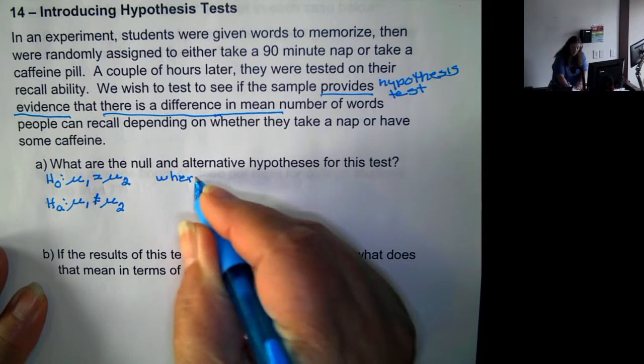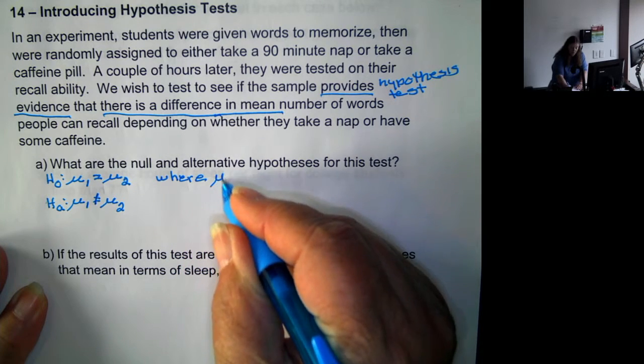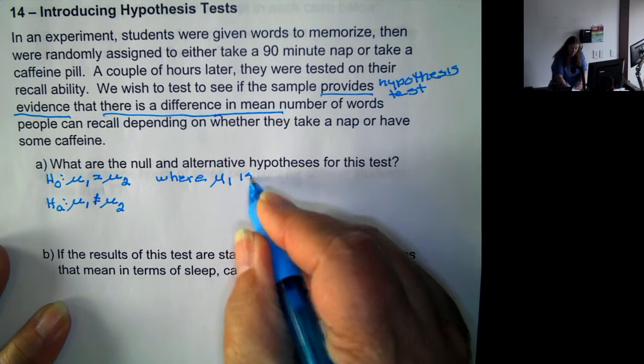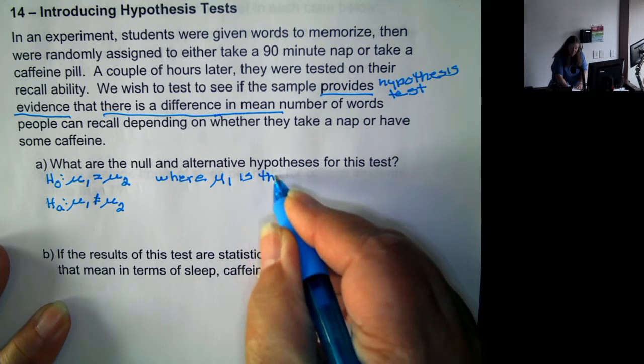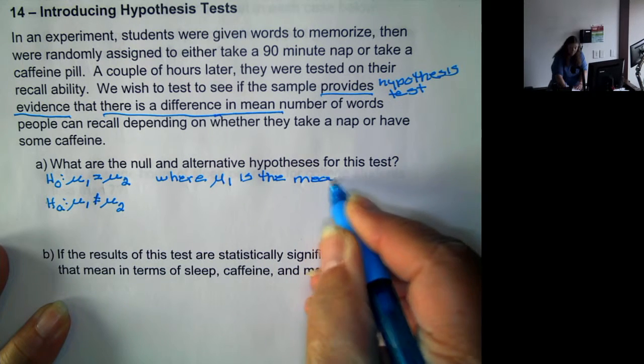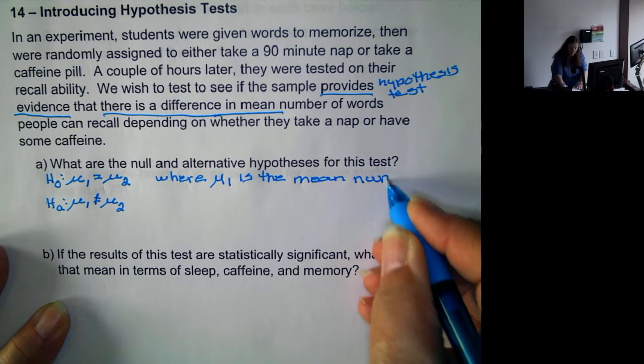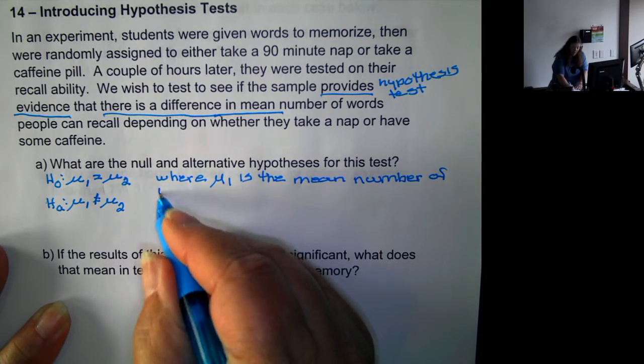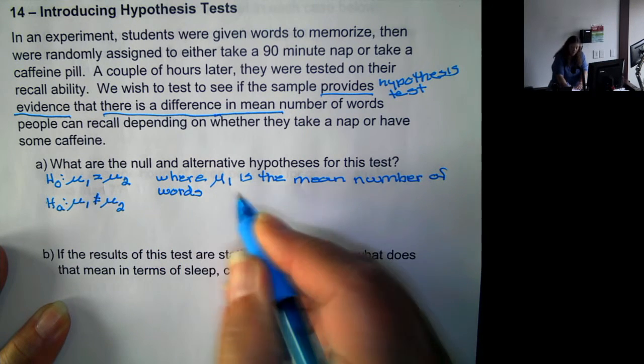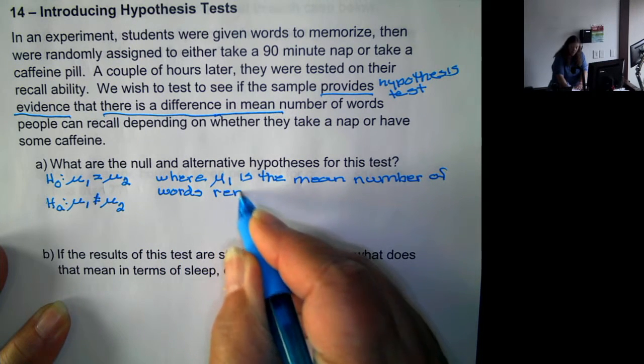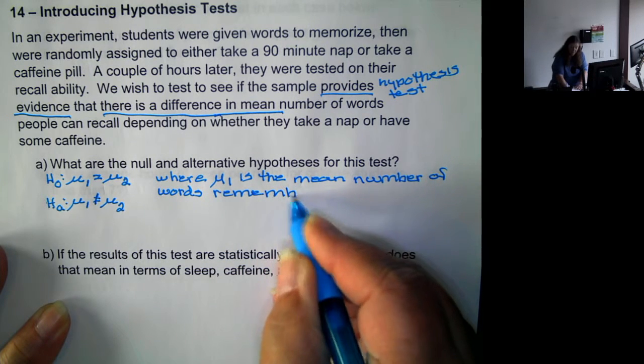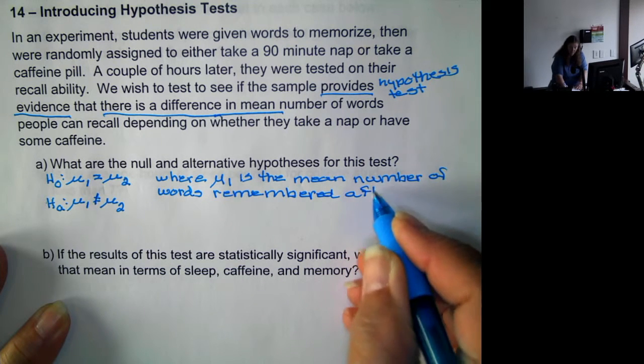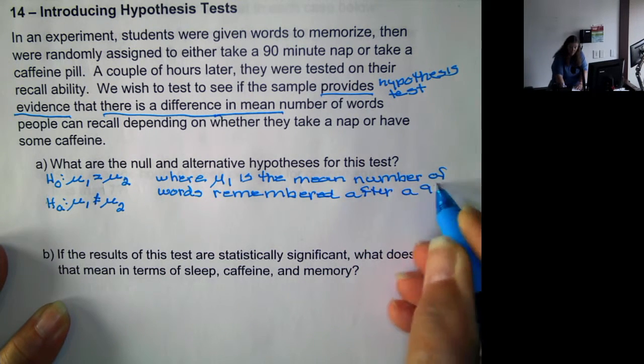So, we have where μ₁ is the mean number of words remembered after a 90-minute nap.